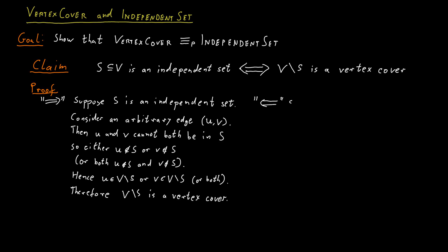For the opposite direction, assume we have a set S that is a vertex cover. Consider any two vertices U and V that are not in S but are in the complement of S. So U and V are both in V minus S.